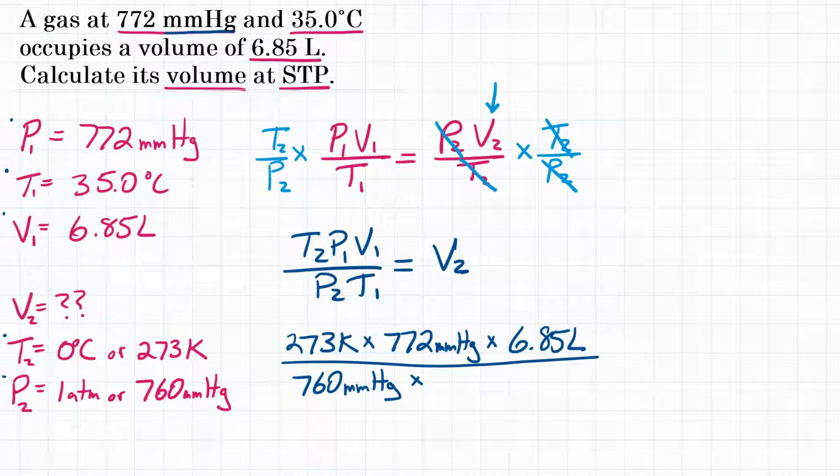That's times T1, which is 35.0 degrees Celsius. Now, when doing gas law problems, we need all temperatures in Kelvin. So we add 273 to get 308 Kelvin on the bottom. And that equals V2.